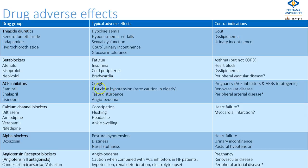The commonest adverse effect of ACE inhibitors is a dry persistent cough. First-dose hypotension is very rare now compared to the 1980s when captopril doses were as high as 150 mg three times daily. Dysgeusia or taste disturbance can occur, and rarely, angioedema. ACE inhibitors and ARBs are contraindicated in young women who may be pregnant as they are teratogenic, and caution is needed with renal vascular disease.